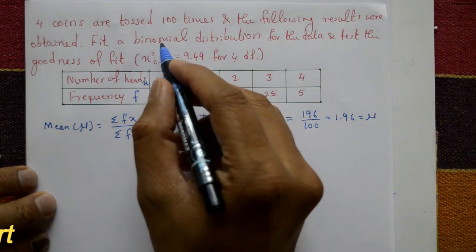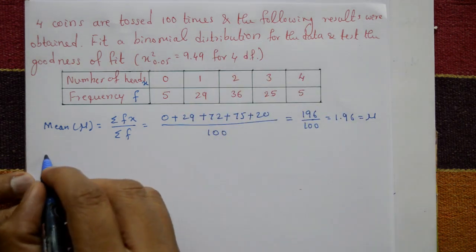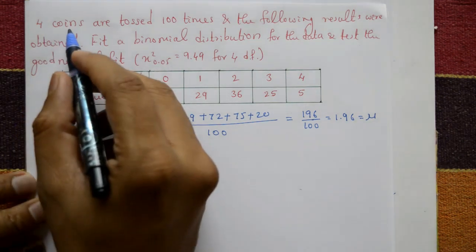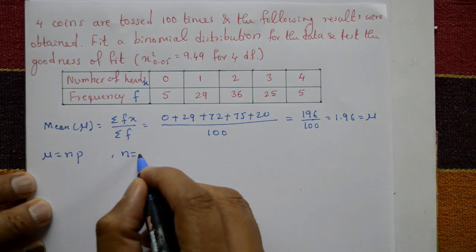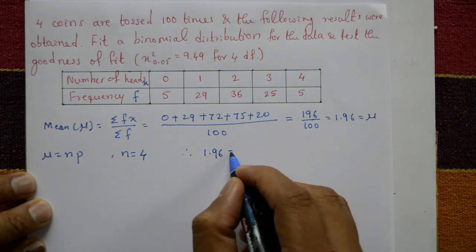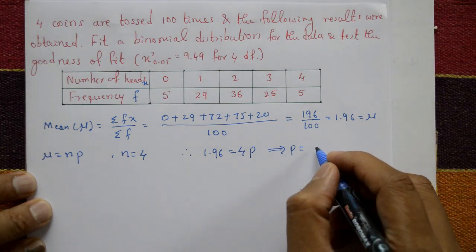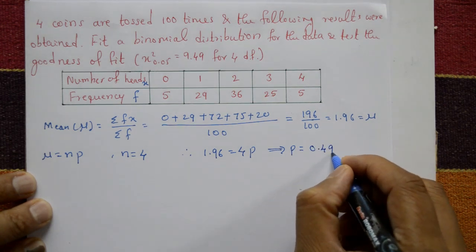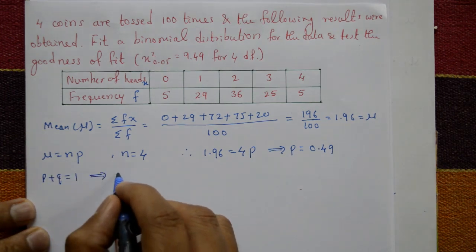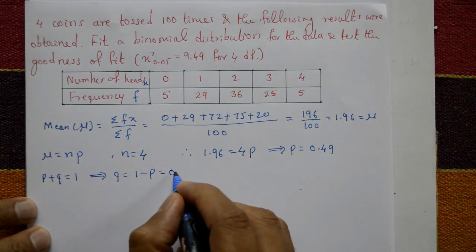This problem follows a binomial distribution. The binomial distribution mean is mu equals n times p. Since four coins are tossed, n equals 4. Therefore 1.96 equals 4 times p, giving p equals 0.49. Since p plus q equals 1, q equals 1 minus p, so q equals 1 minus 0.49, which is 0.51.